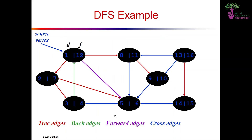DFS introduces an important distinction among edge types. First is the tree edge: a tree edge is encountered when a new (white) node is first discovered. Everything shown in red in the diagram represents tree edges.